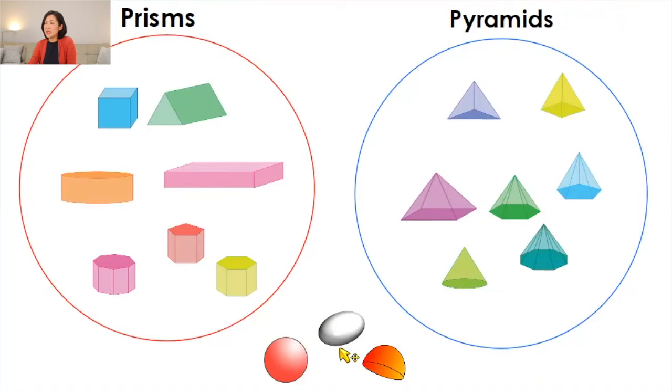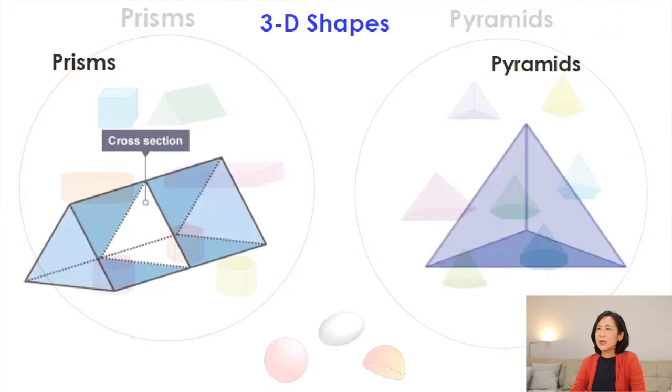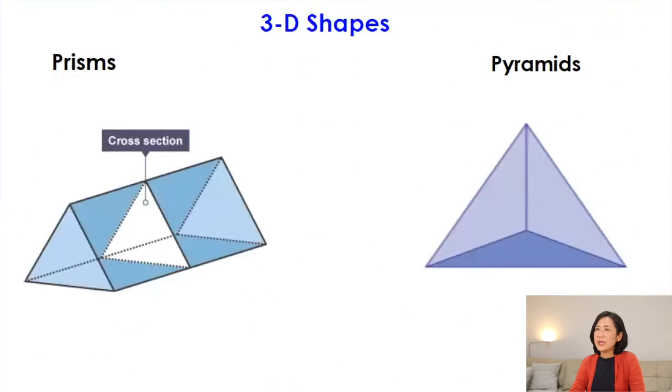You can see that the sphere, hemisphere, and ellipsoid are neither prisms nor pyramids. Now let's talk in a bit more detail about prisms and pyramids, and then compare them.